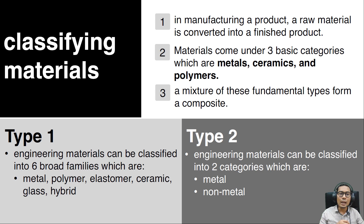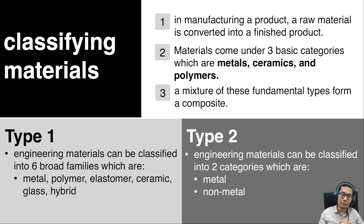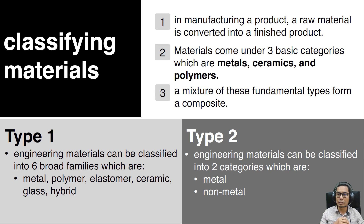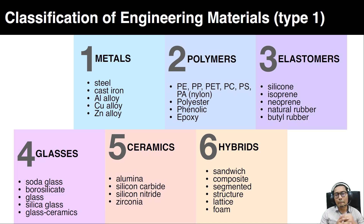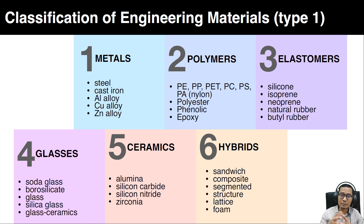There are two types of material classification. Type 1: engineering materials can be classified into six broad families — metal, polymer, elastomer, ceramic, glass, and hybrid material. Type 2: engineering materials can be classified into two categories — metal and non-metal. For Type 1, here I show you the six different groups: metals, polymers, elastomers, glasses, ceramics, and hybrids.